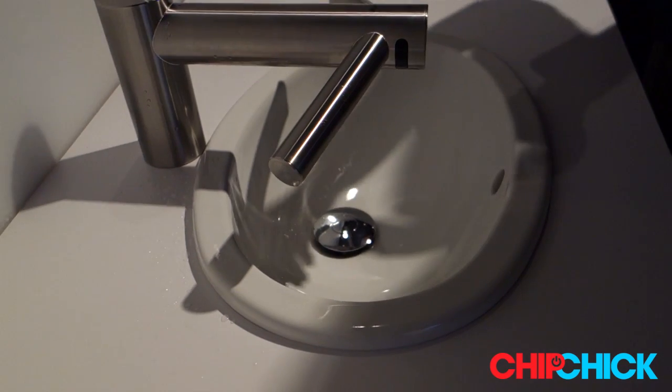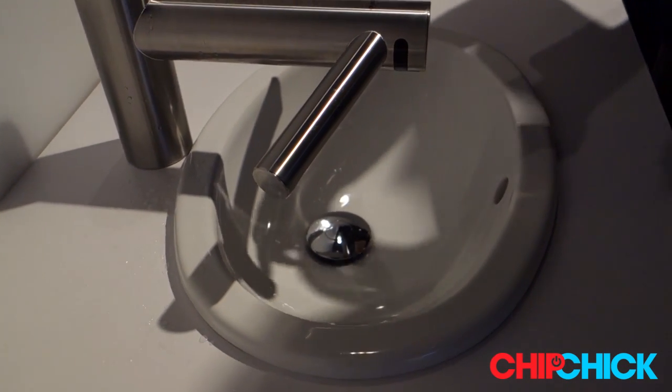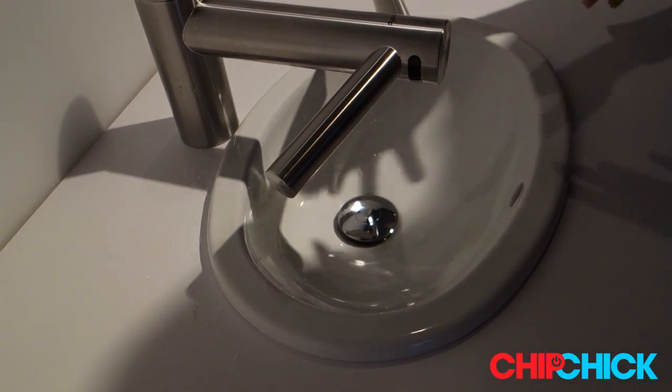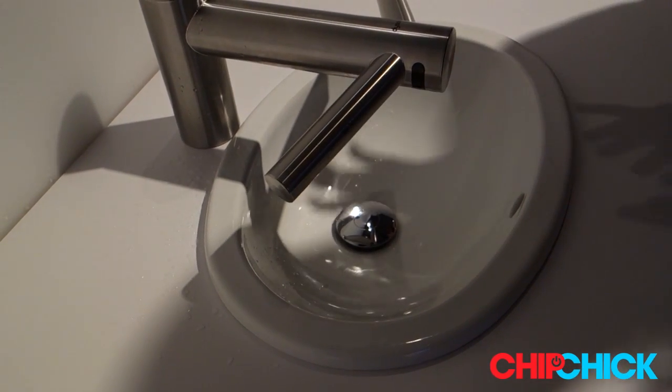There are two separate sensors. There's a sensor directly underneath here, and then there are also two sensors on the side. So you could never have the dryer and the water going on at the same time.